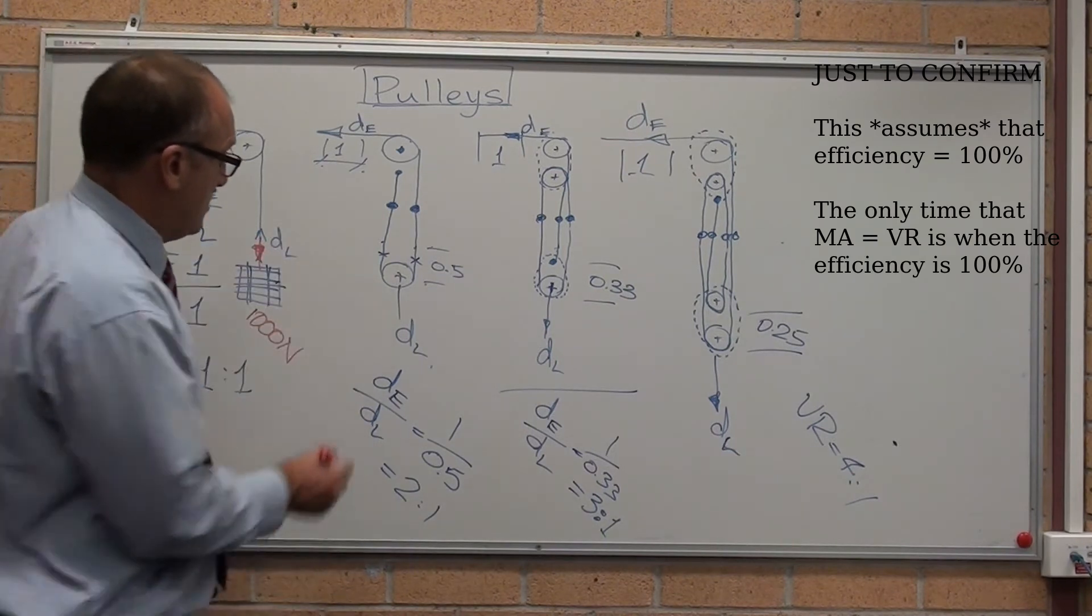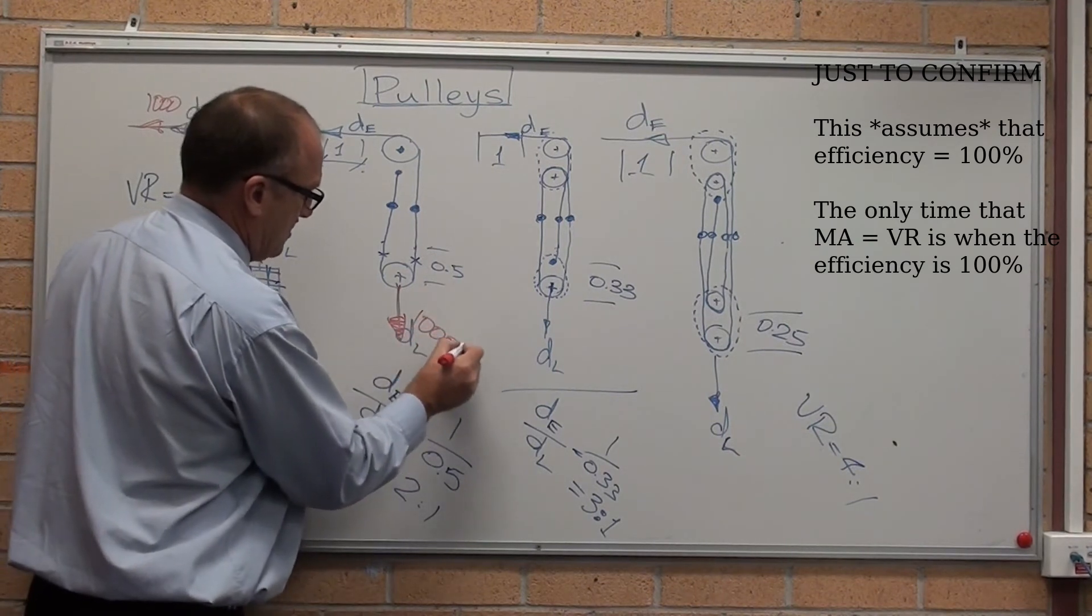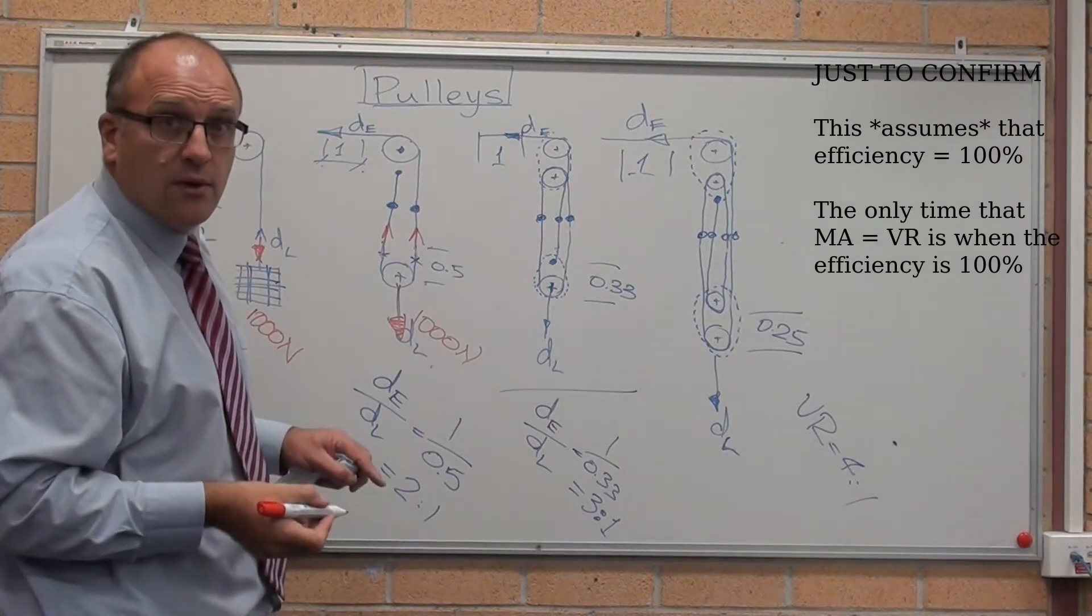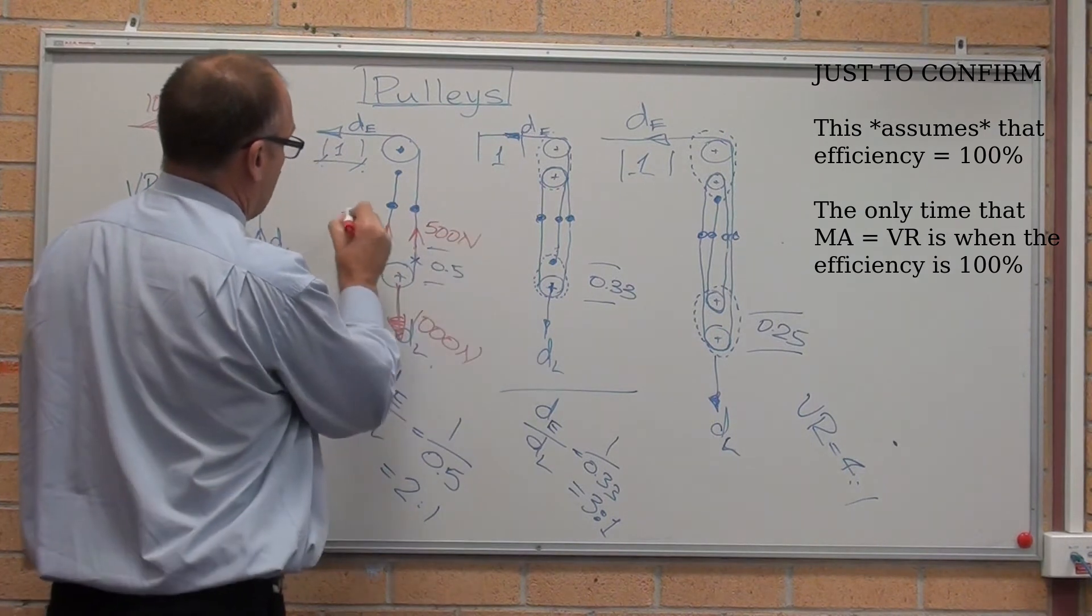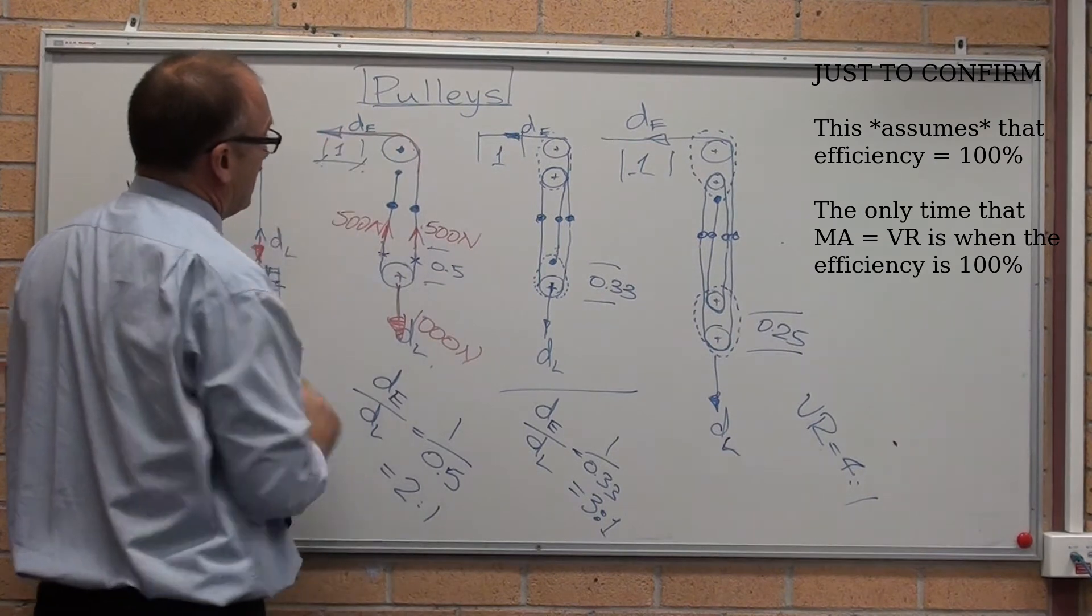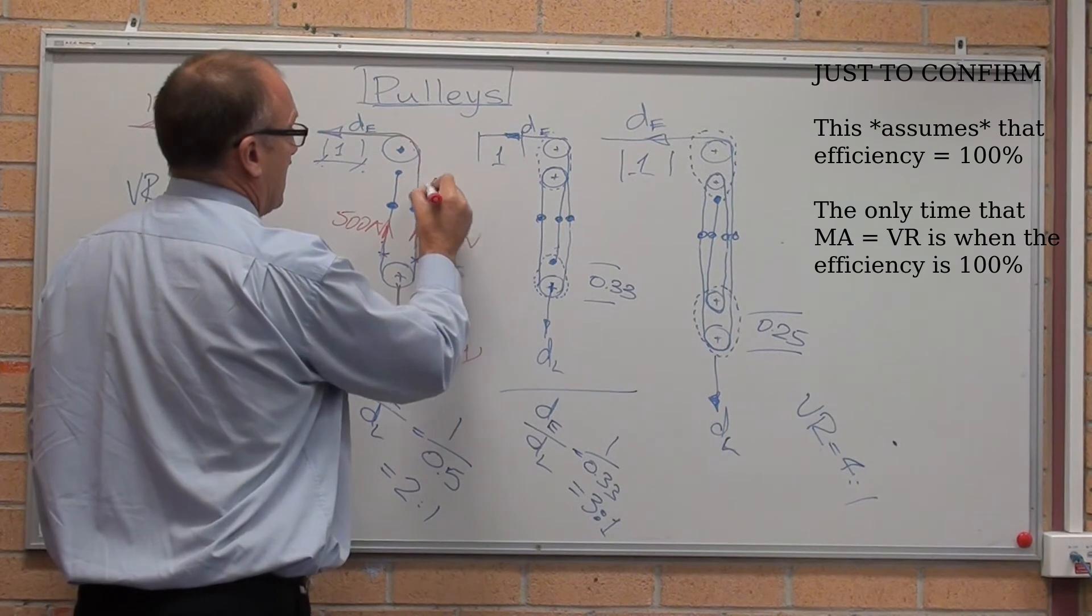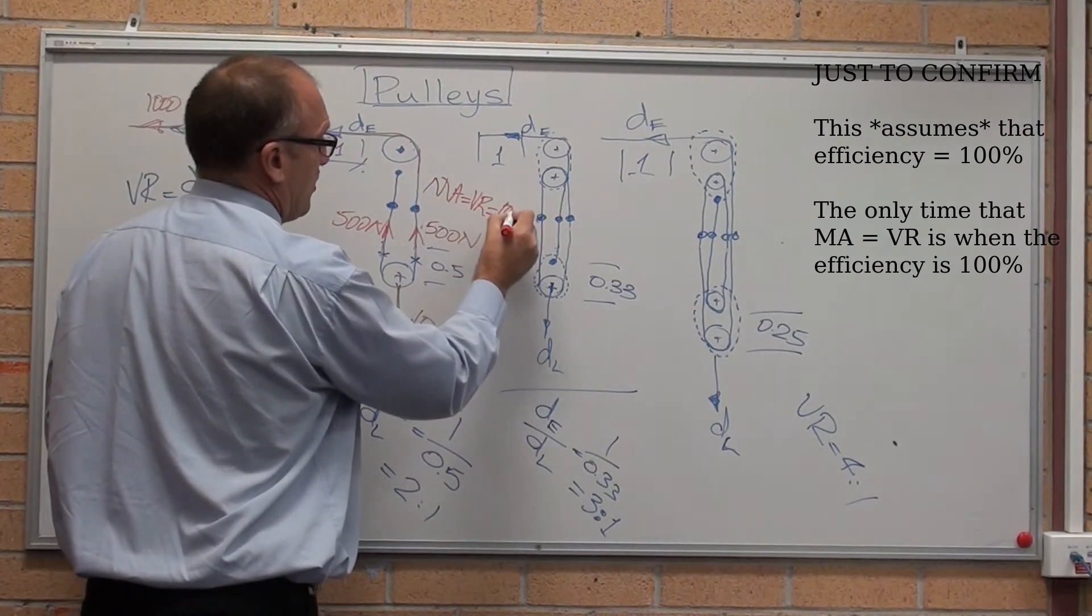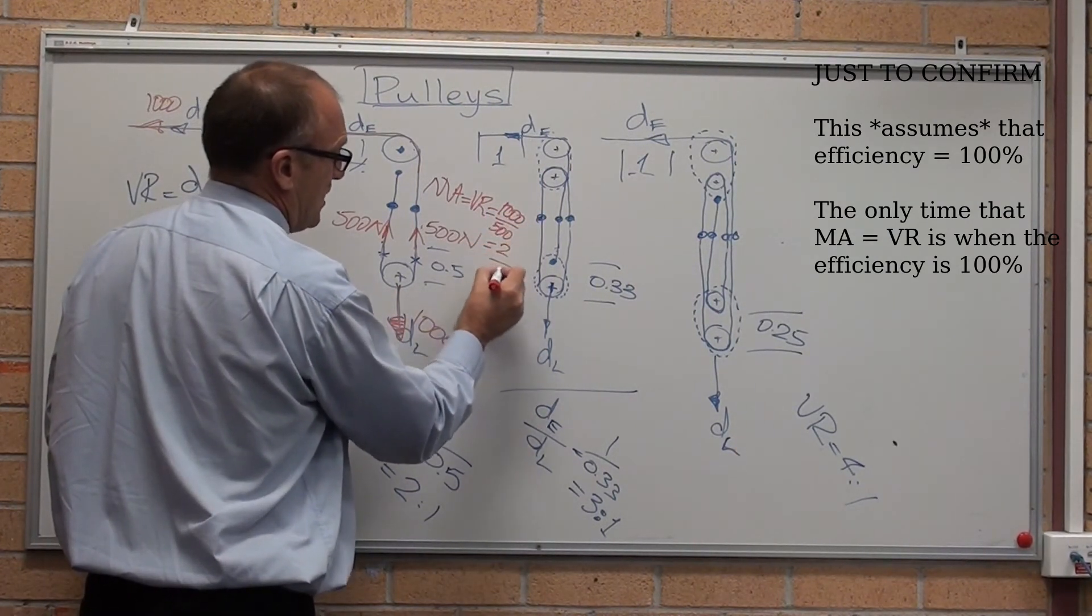Let's have a look at this. There's still that 1,000 newtons pulling down. Now I've got two ropes equally holding up the load. The tension in this rope is 500 newtons. Tension in this rope is 500 newtons. And that rope's connected to the effort. So the effort has to be 500 newtons. Mechanical advantage equals velocity ratio equals 1,000 on 500 equals 2 as to one.